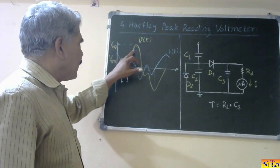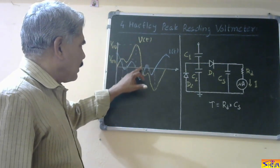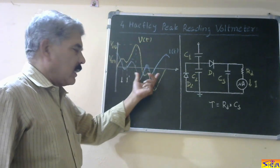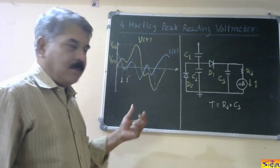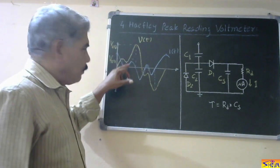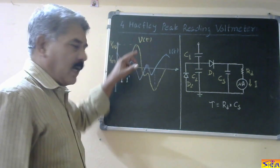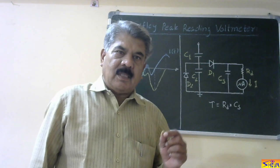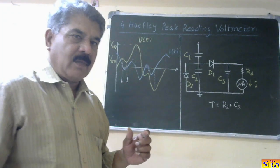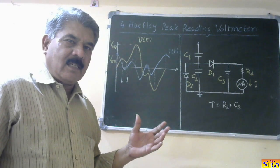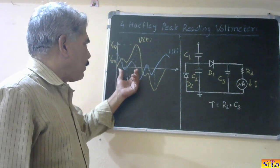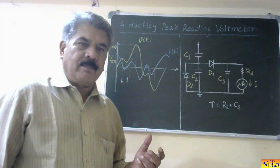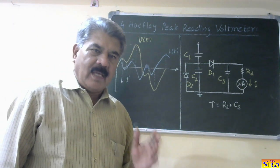Then again it goes to peak value, and then again it starts reducing. This is the negative half cycle. So if you observe the positive half cycle or negative half cycle, there are more than one maxima — one is Vm1, second is Vm2. This is called a false maxima. Whenever the voltage waveform has more than one maxima, the maximum value out of these is called the true maxima; others are called false maxima. When this type of waveform is present, the previous voltage key method fails to measure, or gives an error in the measurement of peak value.